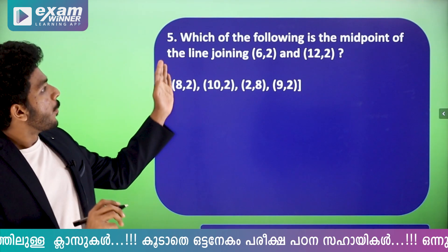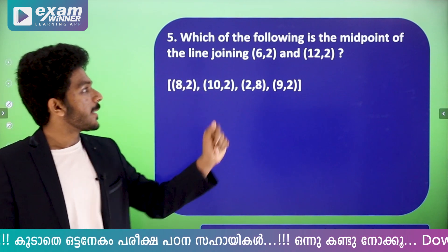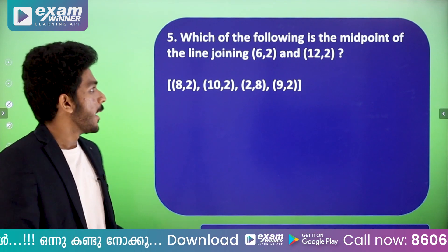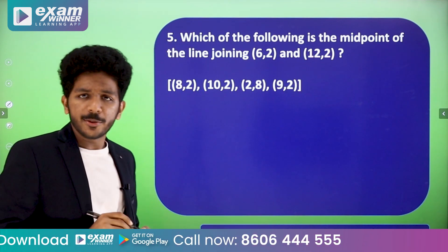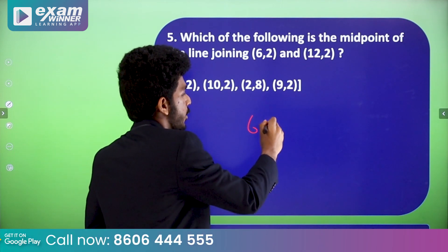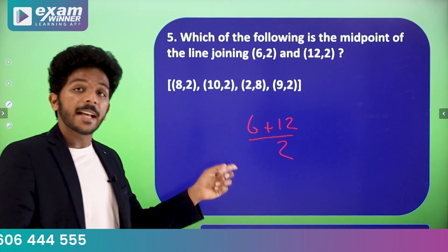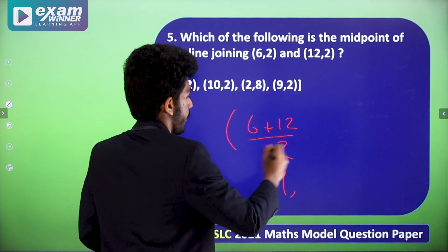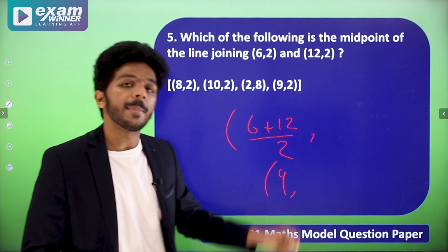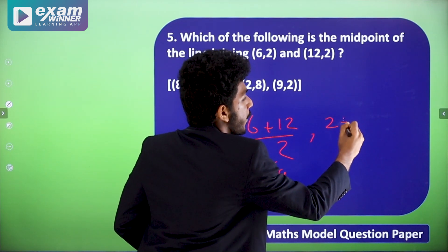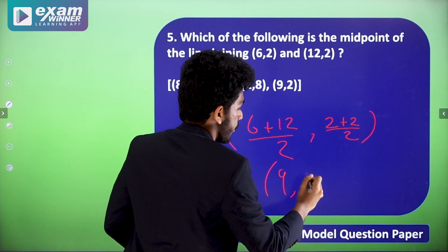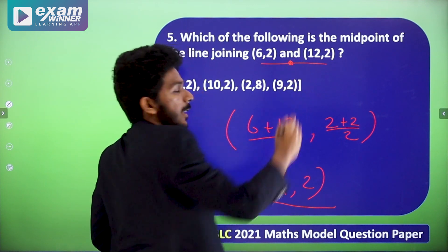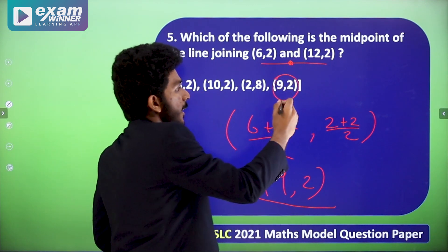Now a simple question: which of the following is the midpoint of the line joining (6, 2) and (12, 2)? To find the midpoint, add the coordinates and divide by 2. For x: 6 plus 12 is 18, divided by 2 is 9. For y: 2 plus 2 divided by 2 is 2. So the midpoint is (9, 2).